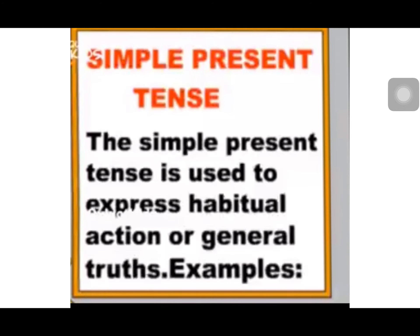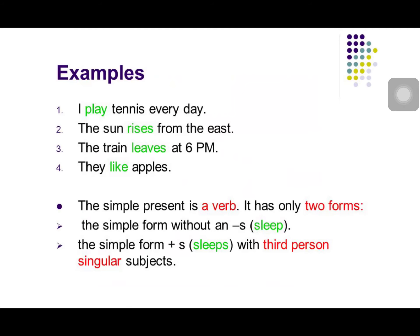Simple present tense. Simple present tense is used to express habitual action or general truth. For example: I play tennis every day. The sun rises from the east. The train leaves at 6 p.m. They like a pulse.